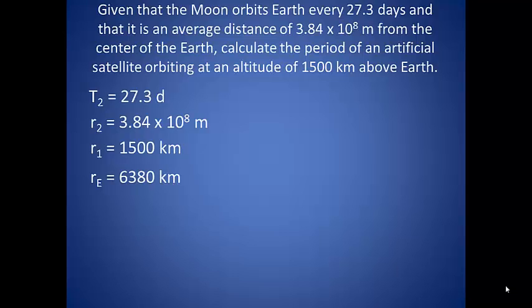So we have two satellites orbiting Earth, one natural and one artificial. Since they are orbiting the same body, we can use our proportion equation to find the orbital period of the satellite. We can define either one as our first body, but let's just go with the artificial satellite in this case.